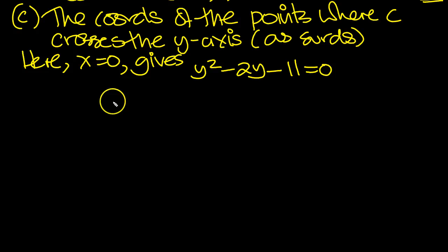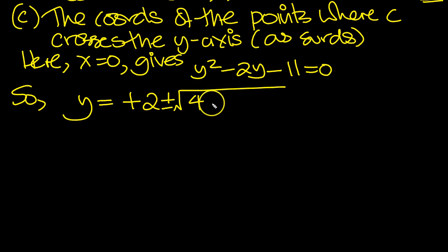So we've got a quadratic. So y is equal to minus b, minus minus 2, plus or minus the square root of b squared is minus 2 squared which is 4, minus 4 times a which is 1, times c which is minus 11. So that changes it to a plus, all over 2 lots of a which is 2 lots of 1 because a is 1.